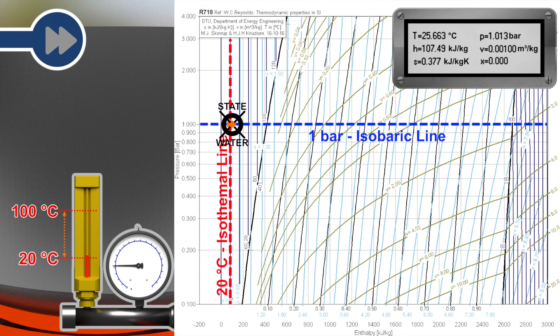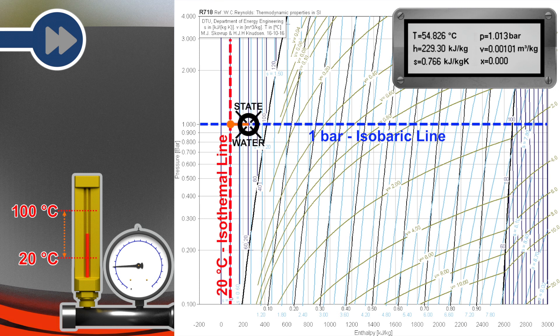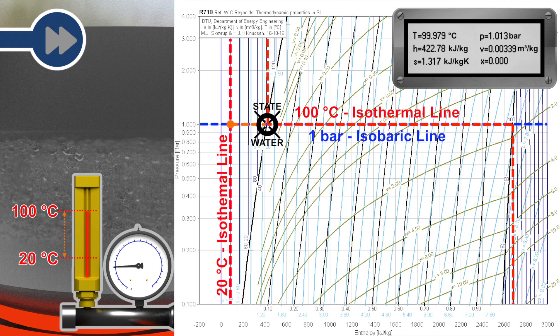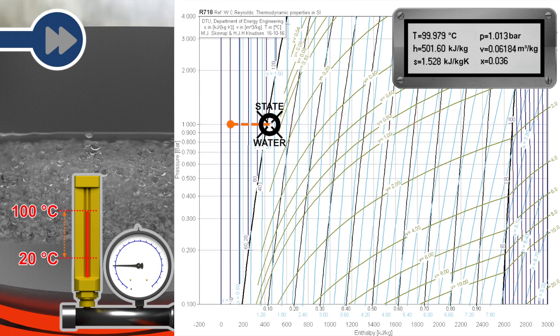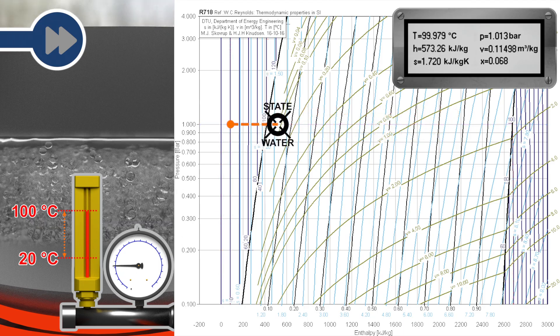At the beginning, the water heats up isobaric at a constant absolute pressure of one bar. When the state reaches the evaporation temperature at 100 degrees Celsius, the water starts to boil. Since the system is open to the surrounding, the steam can escape the system.